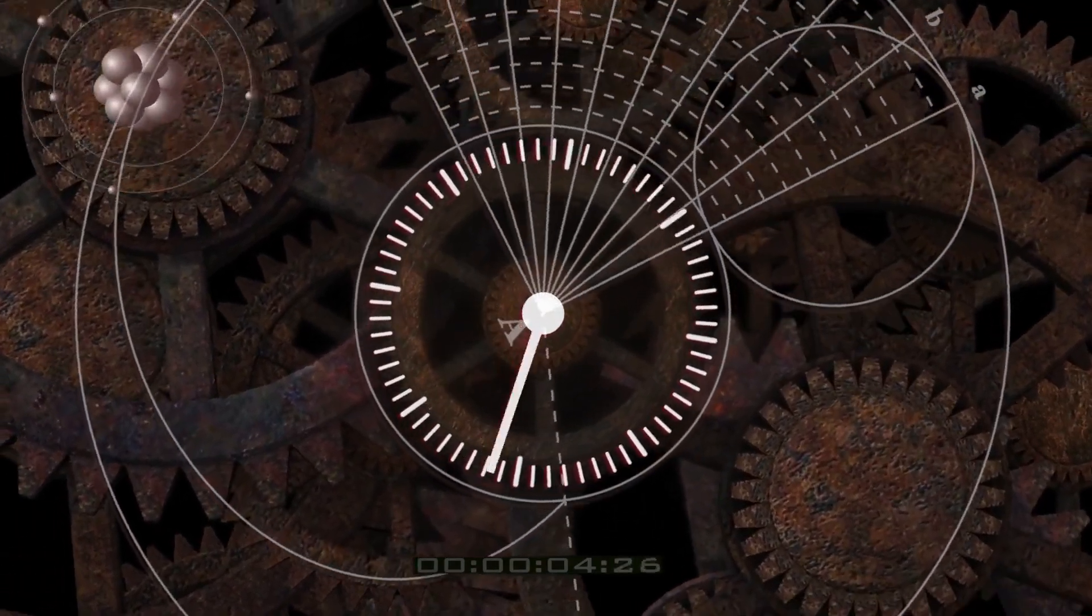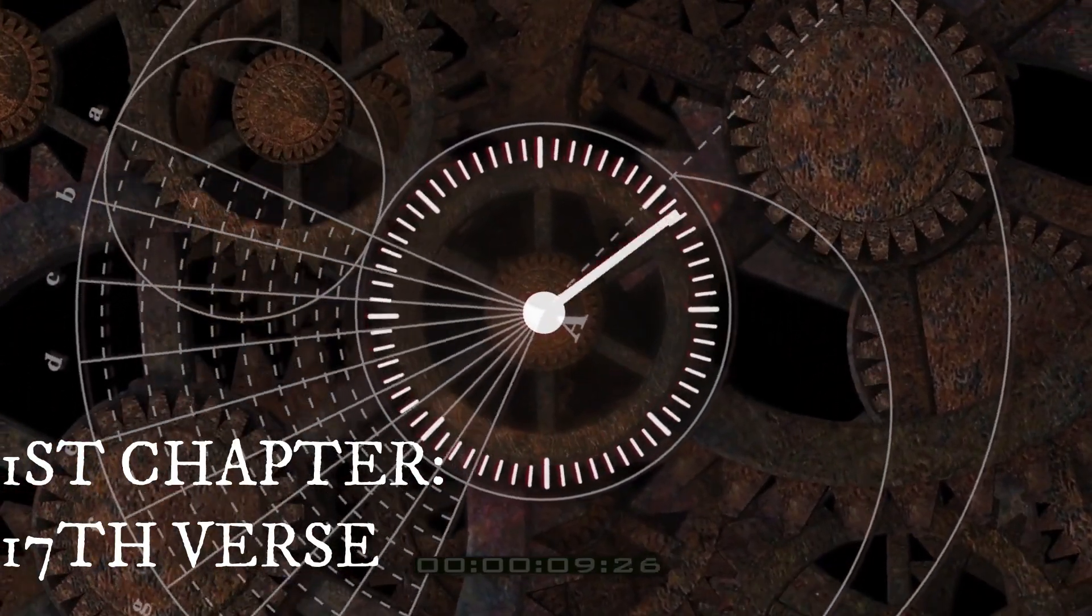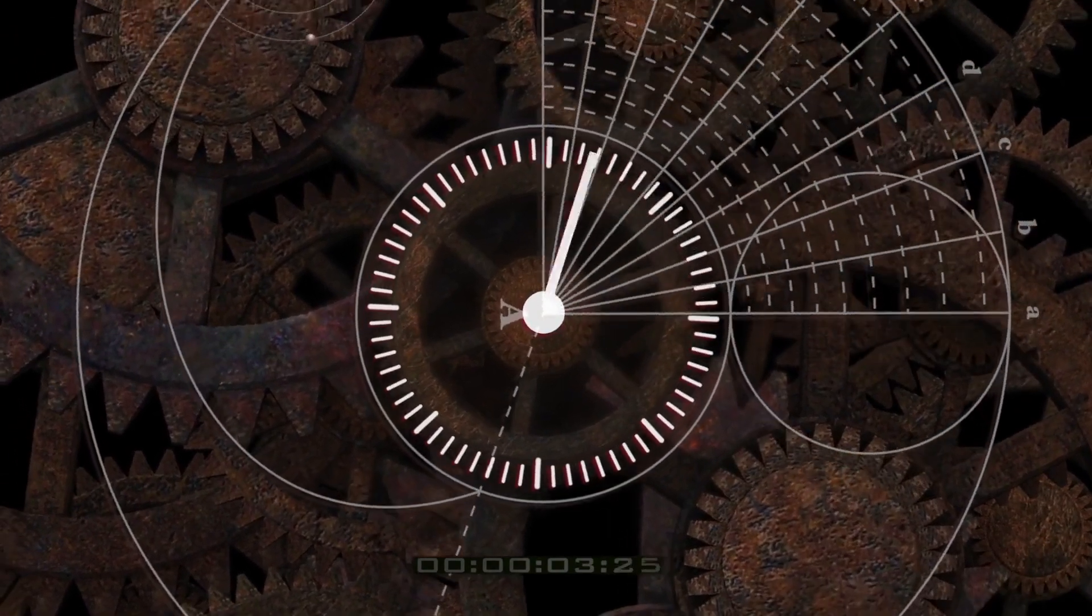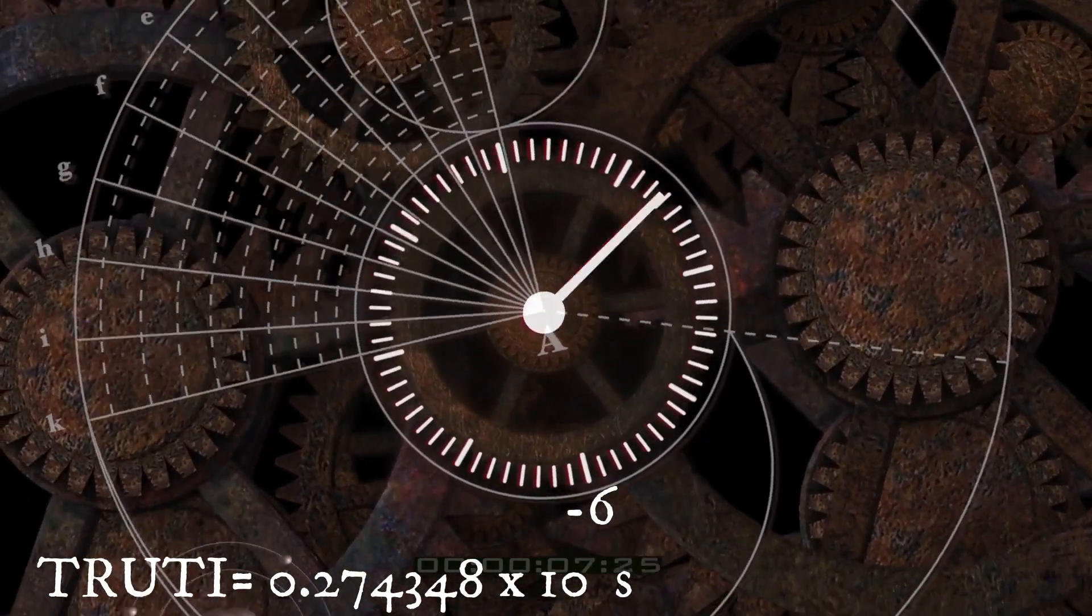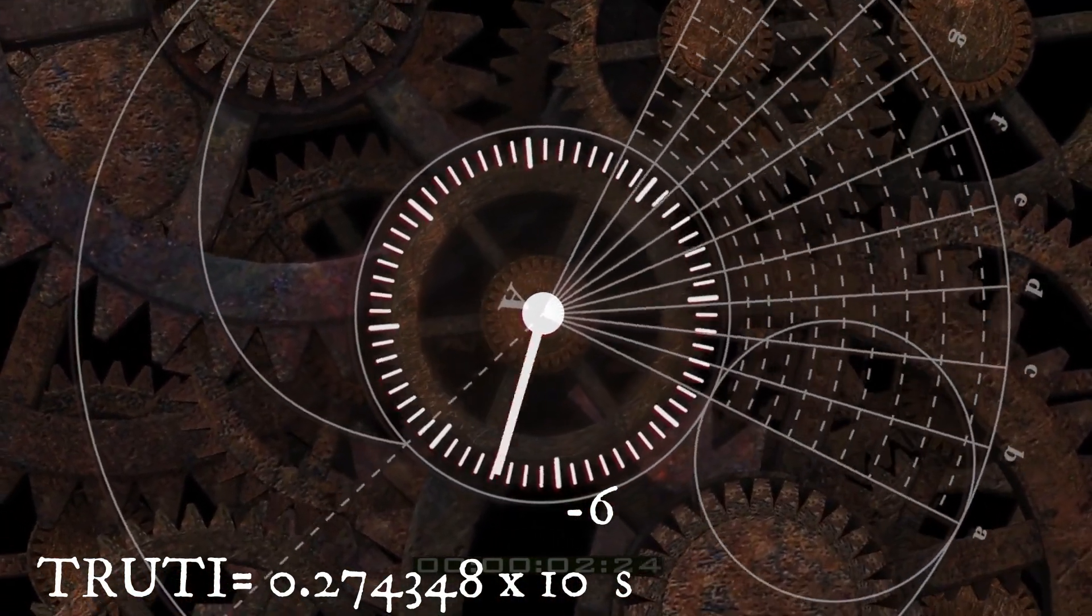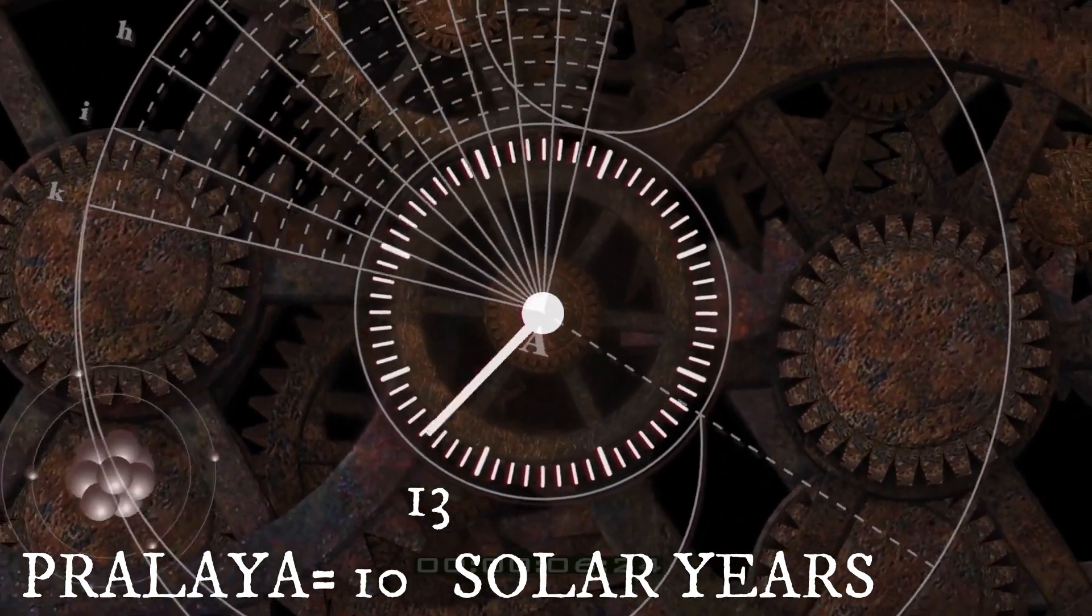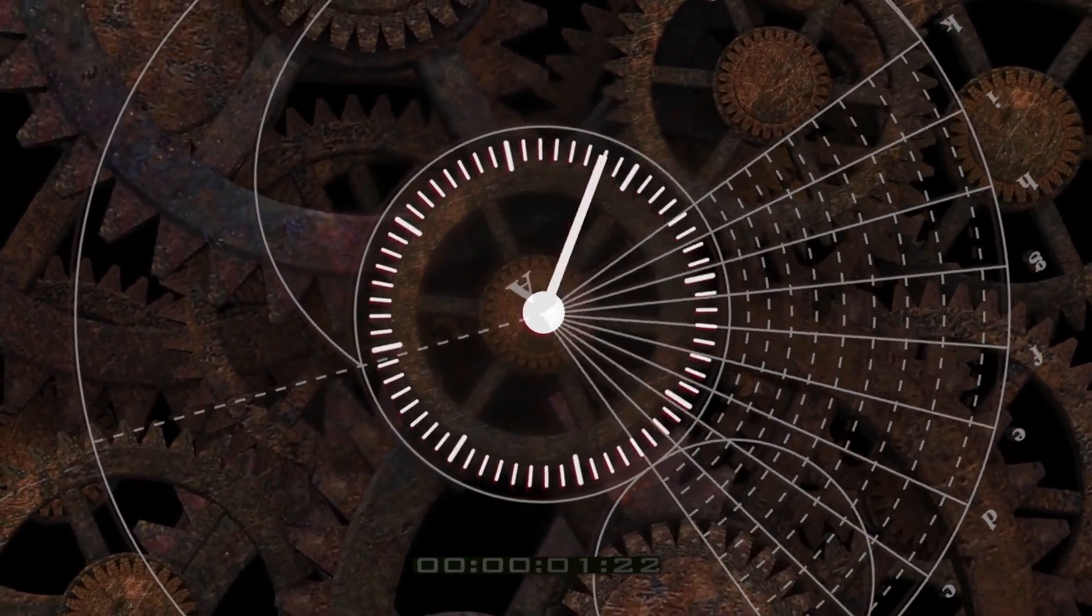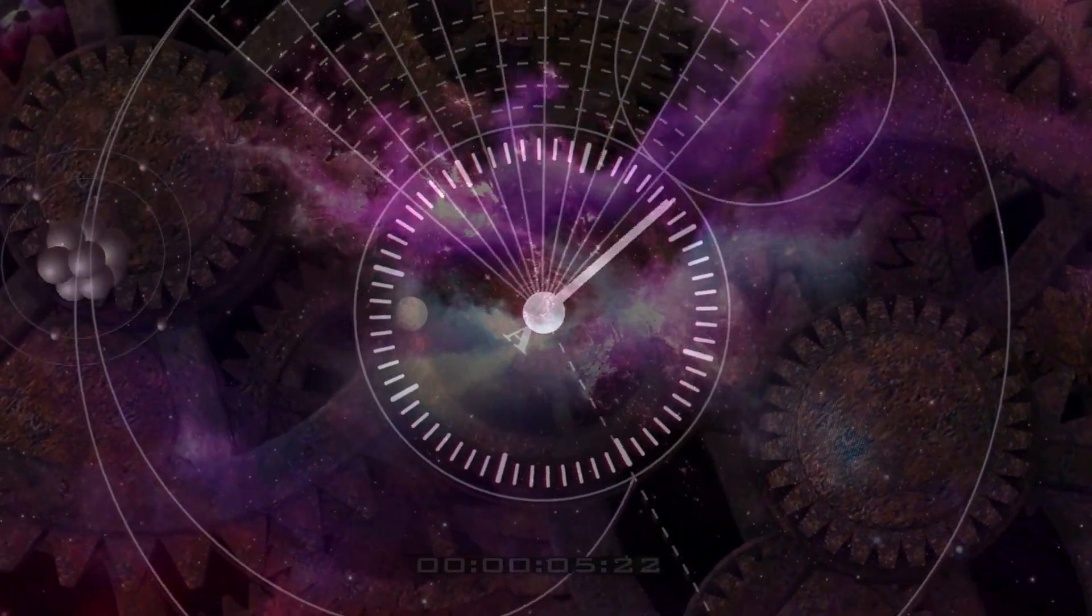In the 17th verse or sloka of the 1st chapter, Samanta speaks about time, beginning from the smallest unit that is Truti which is equal to 0.274348 x 10^-6 seconds to Parardha which is equal to 10^13 solar years.